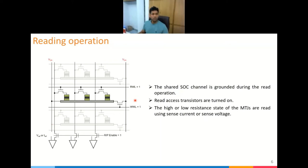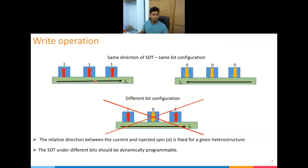The main challenge is the write operation. In a spin orbit torque device, switching occurs due to the spin Hall effect — when you pass a current through the channel, spin current is generated and accumulated at the magnet interface. The direction of accumulated spin depends on the heterostructure. The problem is that the direction of spin accumulation under all three bits on the shared channel is the same, so passing a current switches all bits in the same direction. Writing information like '101' is not possible because the spin accumulation direction under each bit is identical.